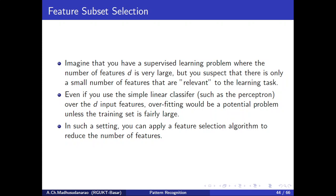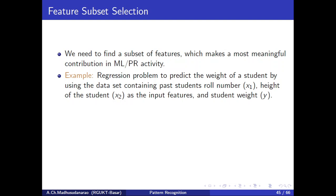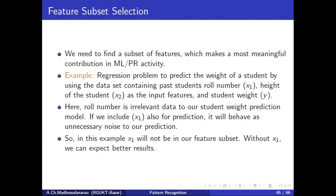In such a setting, you can apply a feature selection algorithm to reduce the number of features. We need to find a subset of features which makes the most meaningful contribution to our machine learning or pattern recognition task. For example, consider a regression problem to predict the weight of a student using a dataset containing the student's role number and height as input features and student weight as the output. Here, role number is irrelevant to the student weight prediction model — including x1 (role number) will behave as unnecessary noise. Without x1, we can expect better results.